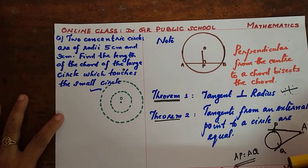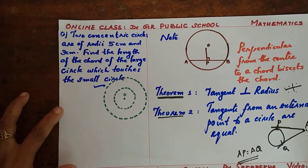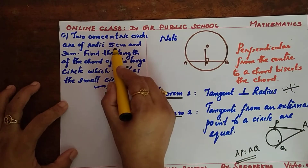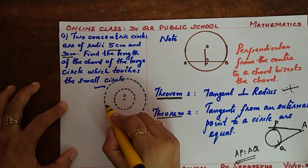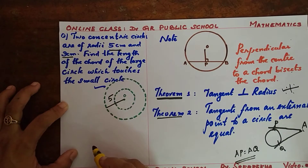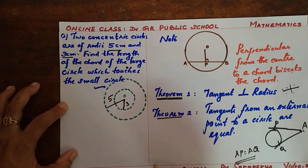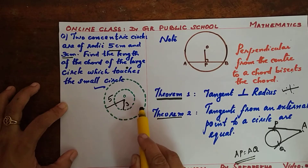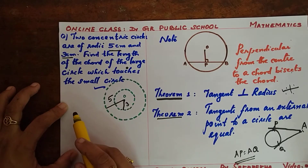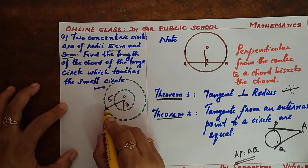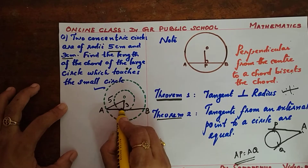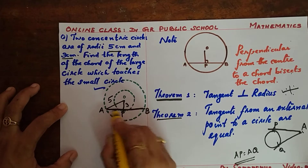Now we are going to do some problems based on the same. First question — this is the textbook question. Two concentric circles, as you know, are circles having the same center but different radii, given as 5 cm and 3 cm. The larger circle has radius 5 cm and the smaller circle has radius 3 cm. You need to find the length of the chord of the larger circle, with the condition that the chord touches the smaller circle. The chord AB is therefore a tangent to the smaller circle.